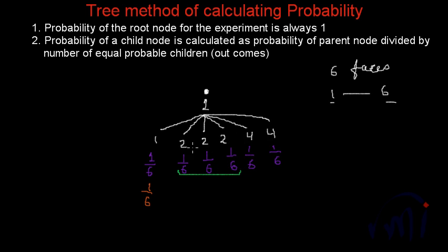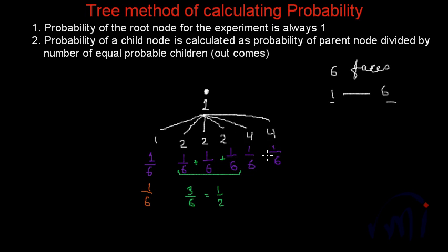Since there is an OR between these three events you have to add all these probabilities. So it will be 1 by 6 plus 1 by 6 plus 1 by 6, that is 3 by 6 or equal to 1 by 2. So the probability of getting a 2 is actually half, while the probability of getting a 1 is 1 by 6. Similarly the probability of getting 4 will be the sum of these two probabilities, equal to 2 by 6 or 1 by 3.